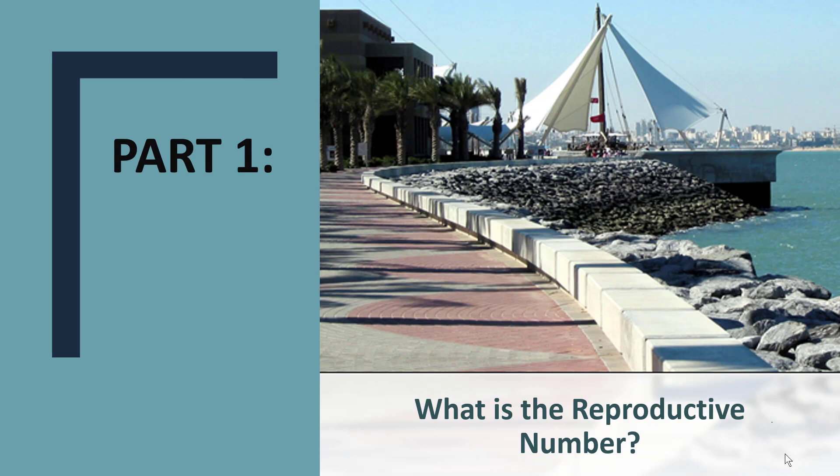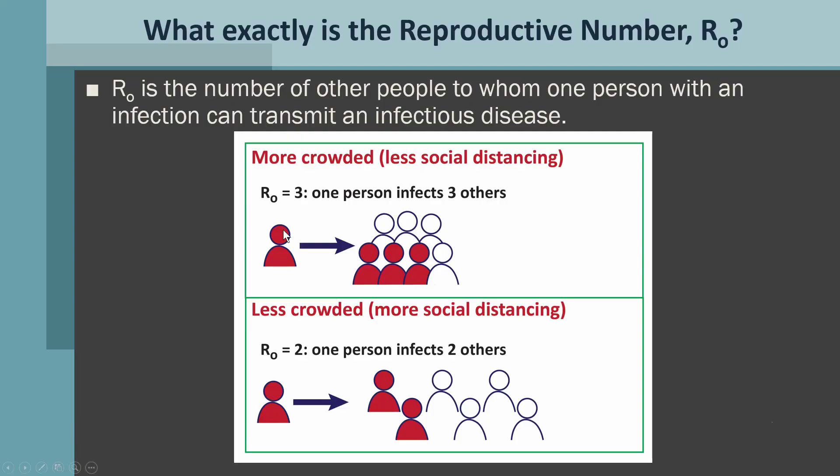What is the reproductive number, or R0? Simply put, R0 is the number of other people to whom one person with an infection can transmit an infectious disease.